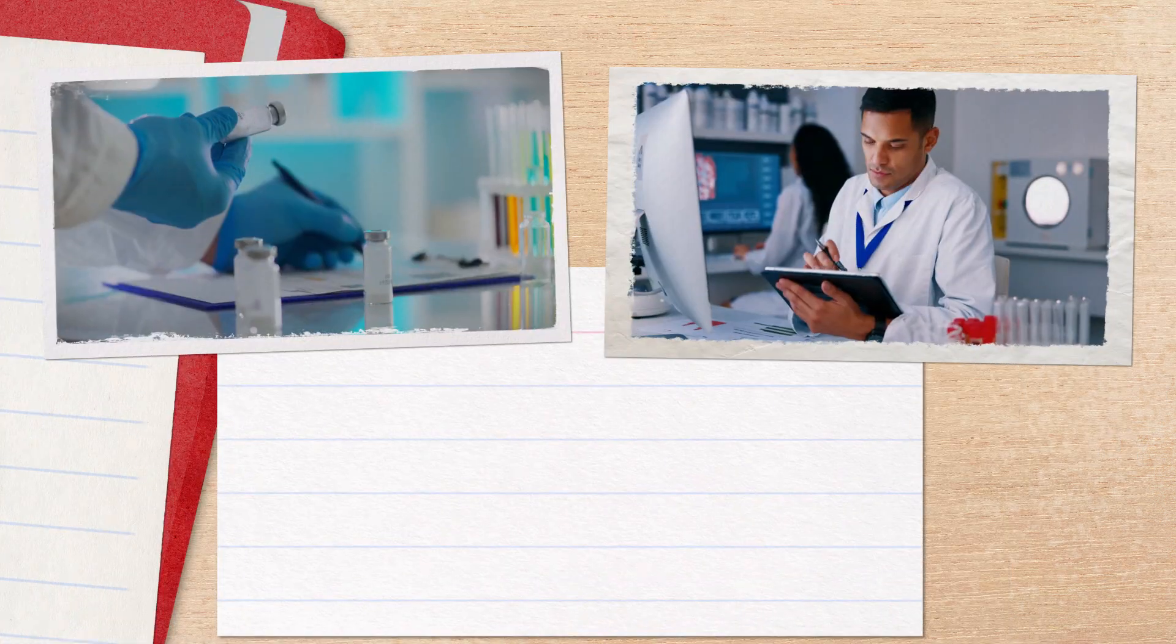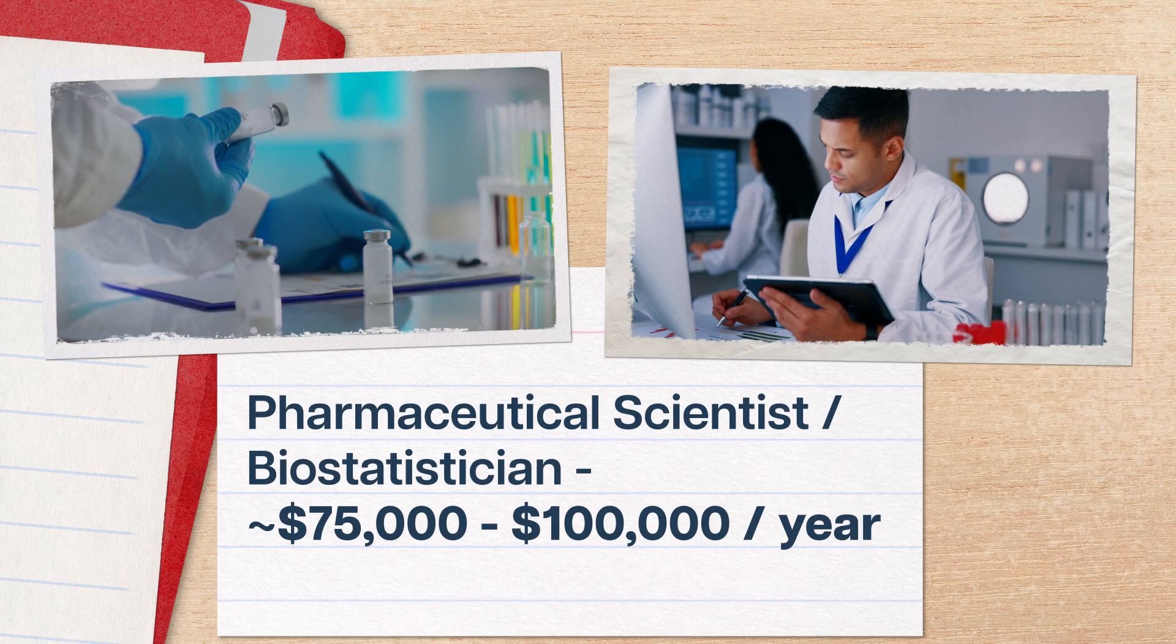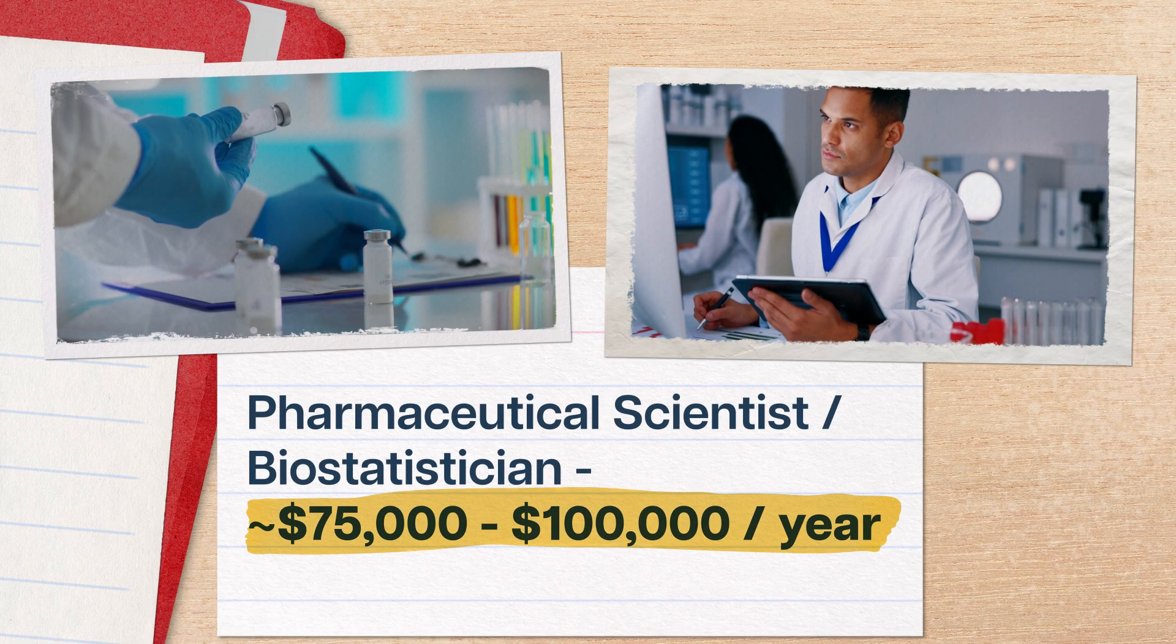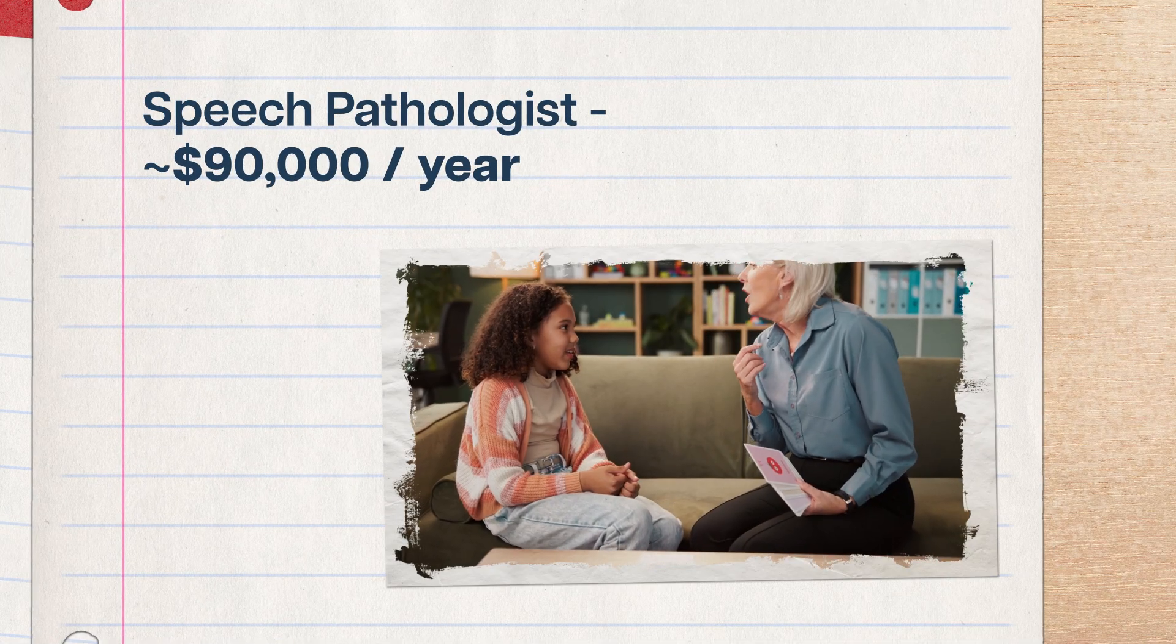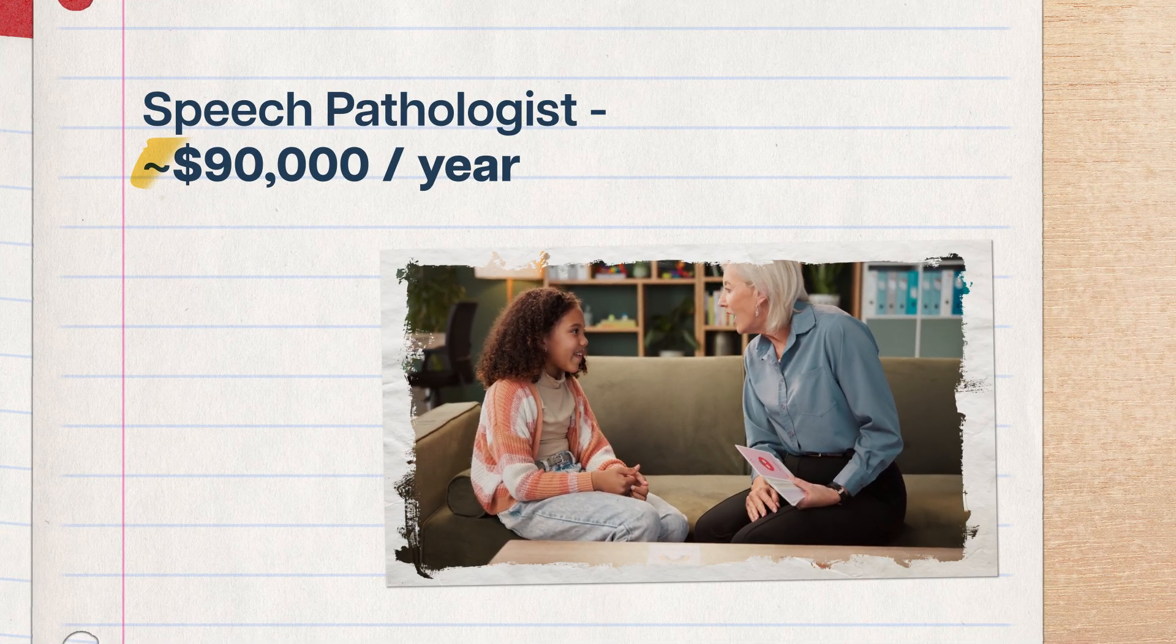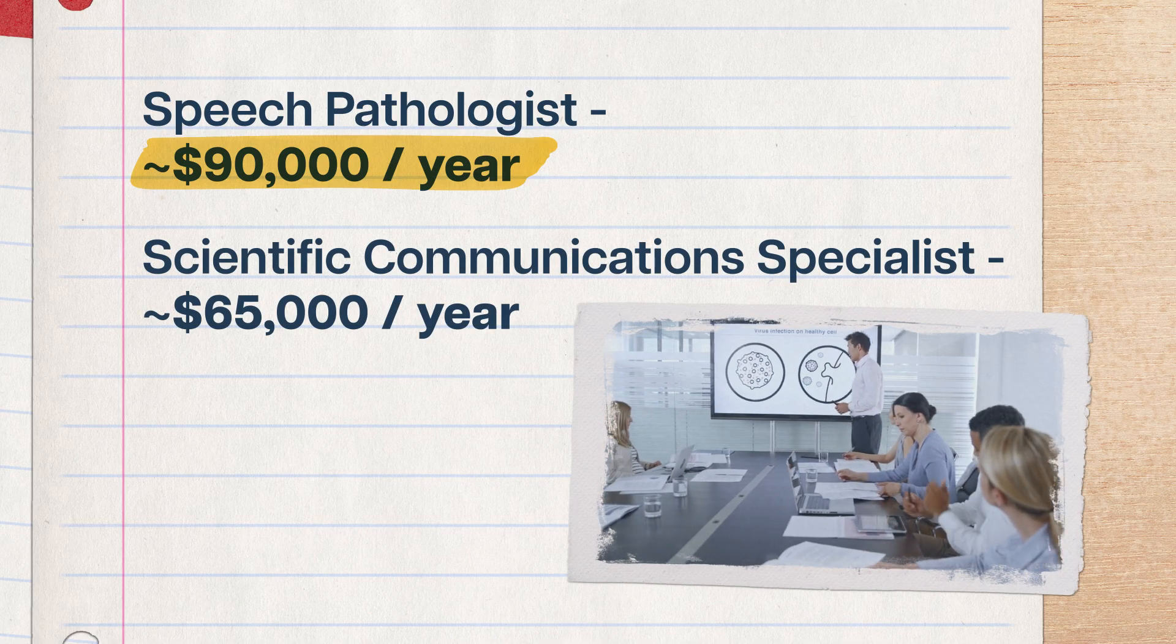And you might be able to find jobs that aren't strictly neuroscience research, like as a pharmaceutical scientist or biostatistician, making anywhere from $75,000 to $100,000 a year. Or you could go to grad school in a slightly different field and become a speech pathologist, making around $90,000, or a scientific communication specialist for around $65,000.